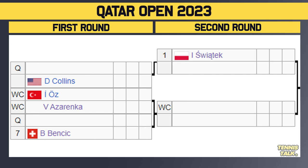Starting at the top of the draw, the top four seeds get a bye in the first round. Iga Swiatek, the defending champion, gets a bye in the first round. She awaits the winner of a qualifier versus Danielle Collins. Collins and Swiatek played at the Australian Open last year, but Collins got a win, so that's a very interesting matchup in the second round. Then we've got Azarenka as the wild card — very strange to see that — taking on Oys, who's the Turkish wild card.